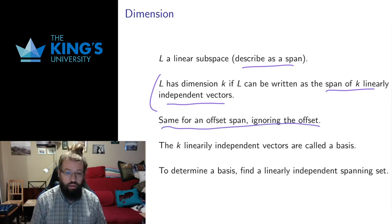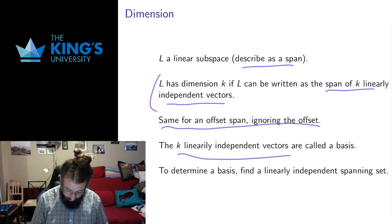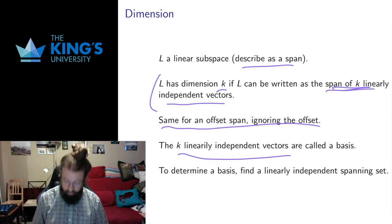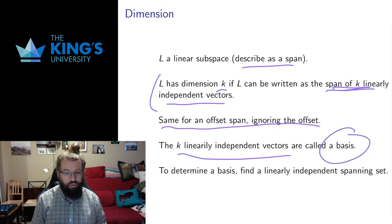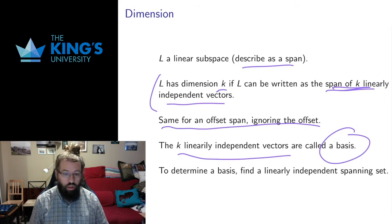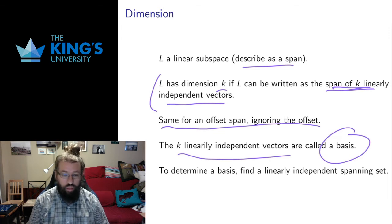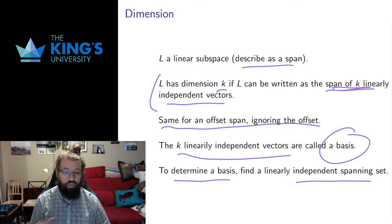The same definition works for the offset span — the offset doesn't change the dimension, it just moves the object. These k linearly independent vectors that span the space are called a basis. A basis is a minimal spanning set — the minimum number of vectors you need. A basis is not unique; a linear subspace will have infinitely many different bases. But it's often useful to fix a basis to work with. To determine a basis, you find a set of vectors that span the space and confirm that the set is linearly independent.